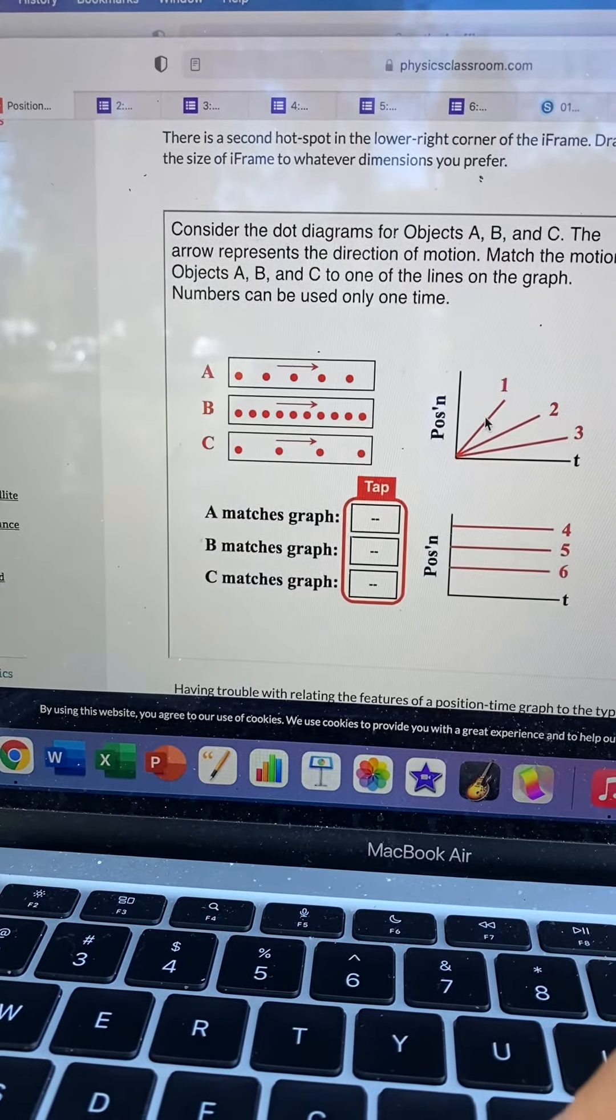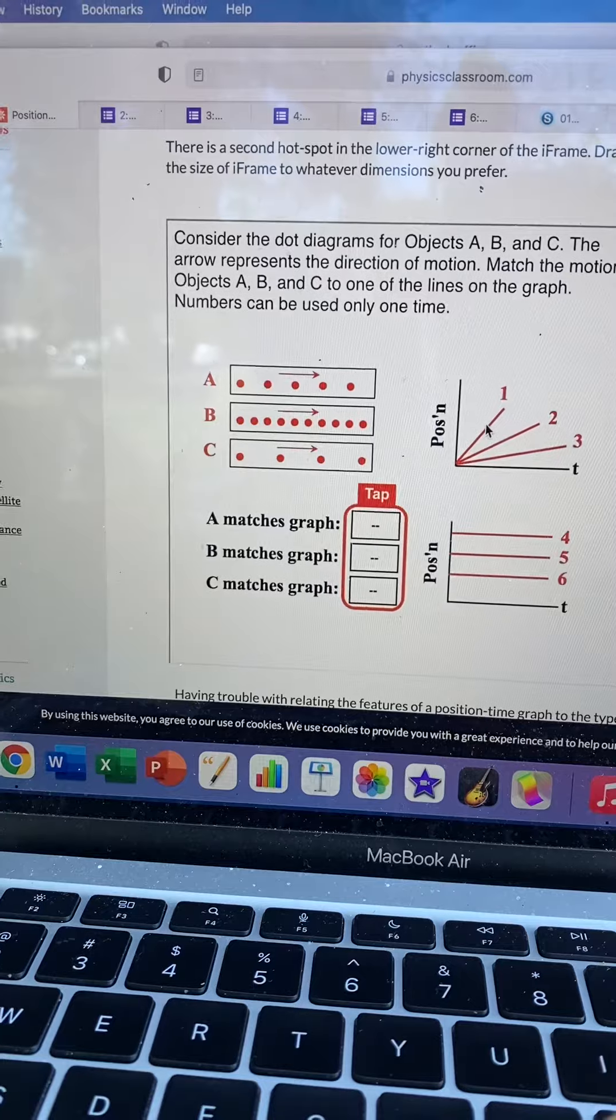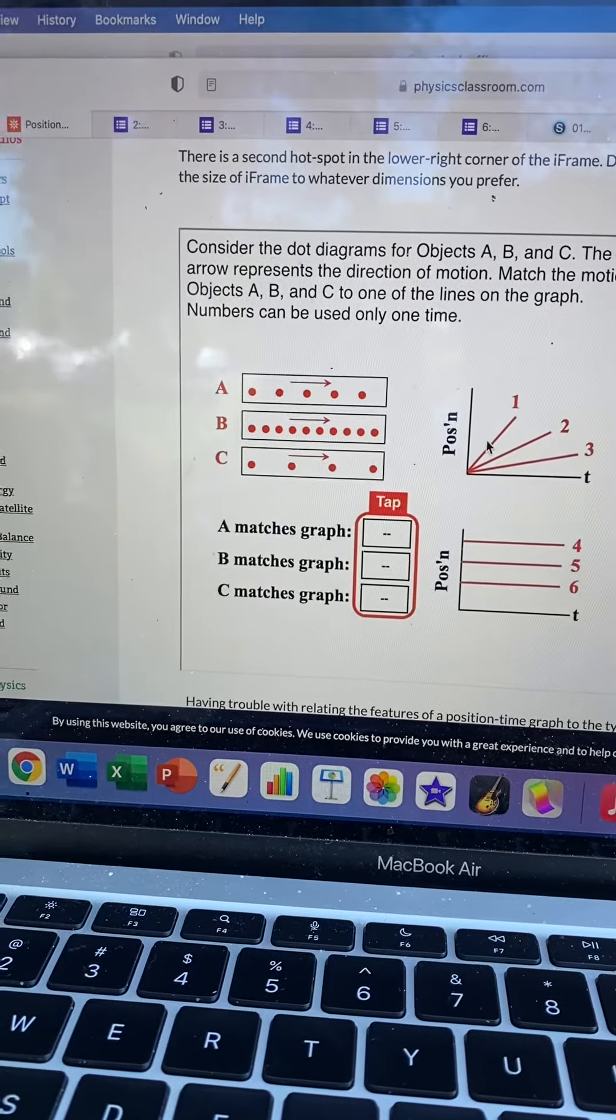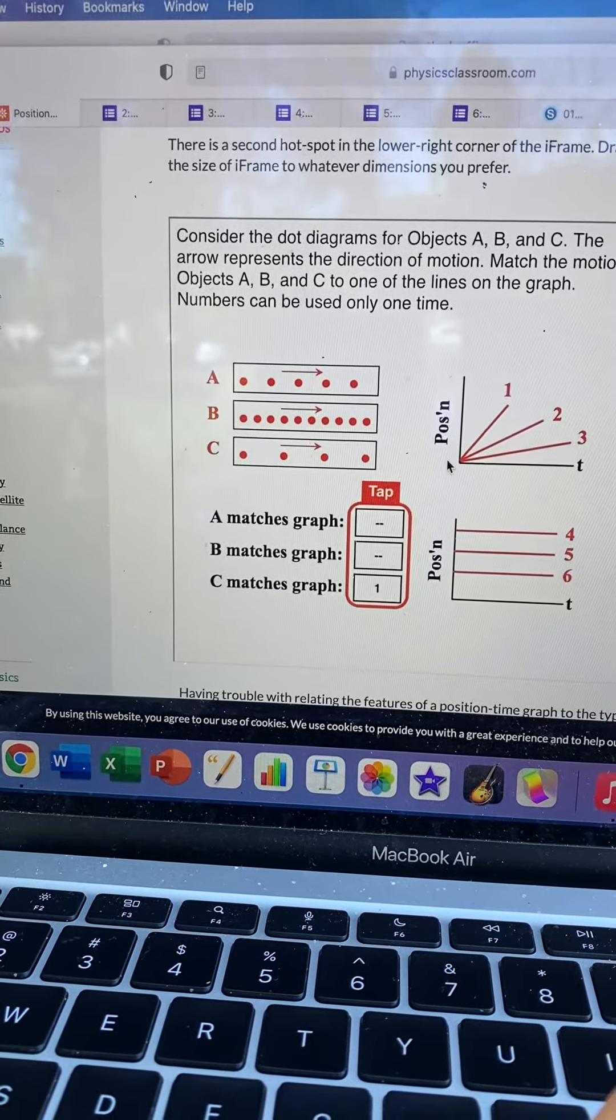One here has the steepest slope. Remember, slope is velocity. So the steeper the slope, the higher the velocity. So one is going to be the fastest. So that would be C. C matches one.